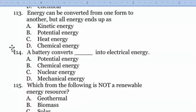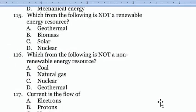Question 114: A battery converts chemical energy into electrical energy, option D. Question 115: Which from the following is not a renewable energy resource? Nuclear is not a renewable energy resource, option D. Question 116: Which from the following is not a non-renewable energy resource? Geothermal, option D.